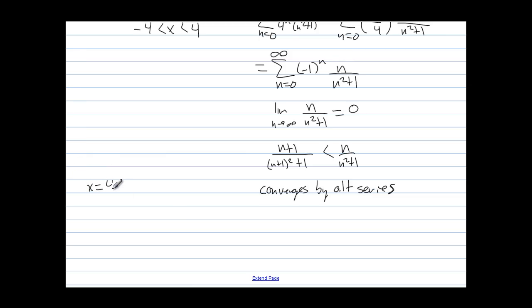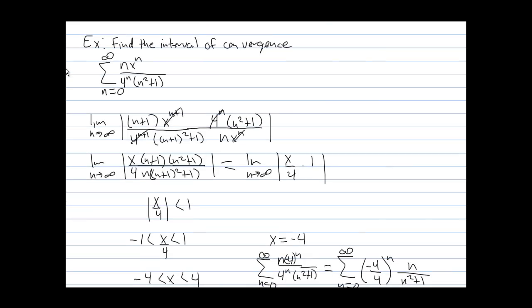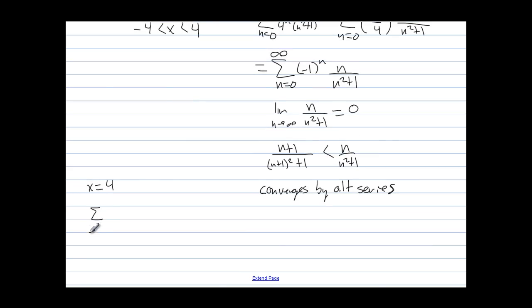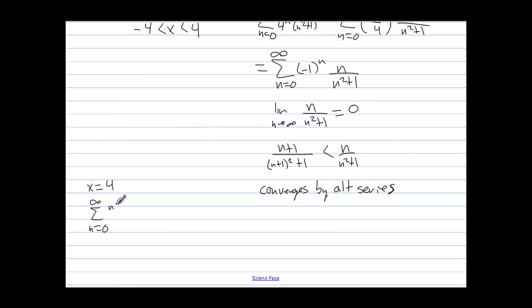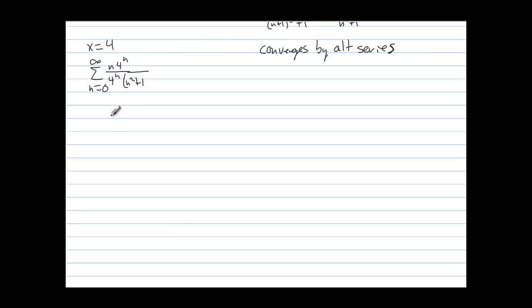What about x equals 4, the other endpoint? If we plug 4 into the original series, we have sigma from n equals 0 to infinity of n times 4 to the n over 4 to the n times n squared plus 1. In this case the 4 to the n's cancel, and we get the series from n equals 0 to infinity of simply n over n squared plus 1. We can compare this to 1 over n, which is the harmonic series, and so it diverges.